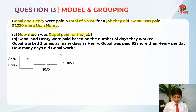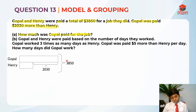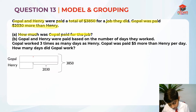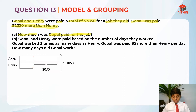This is Gopal — he had $2,030 more than Henry, and they had a total of $3,850. This portion here is the difference. I hope you understand that.